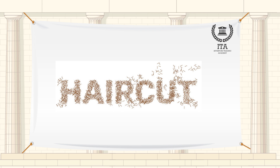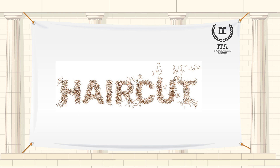A haircut refers to a cut in the value of investments lenders are asked to take. For example, a 50% haircut on an investment means you'll get back only half of what you paid.